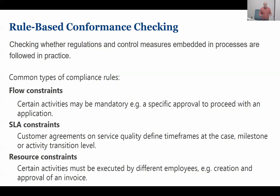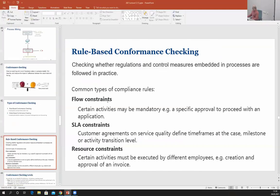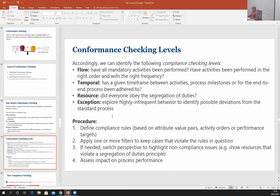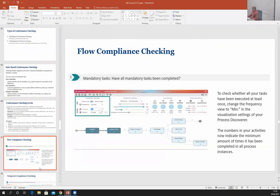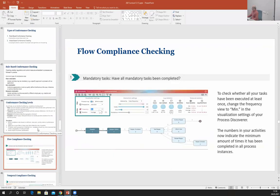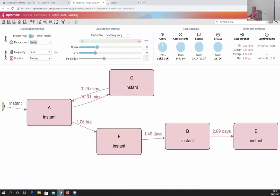Finally, there are resource constraints — a given task must be executed by a certain type of resource. For example, invoices must always be approved by a specific type of employee, not just any employee. Financial fraud in organizations is a very big deal, costing a lot every day, so companies set policies to ensure they don't suffer from internal financial fraud. Double-paid invoices are also very common in large organizations.